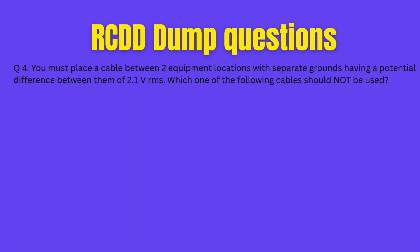Question 4. You must place a cable between two equipment locations with separate grounds having a potential difference between them of 2.1 VRMS. Which one of the following cables should not be used? A. Multi-mode. B. Single-mode. C. UTP. D. STP. Got your thinking cap on? The clock's ticking, 20 seconds.